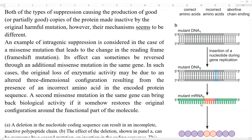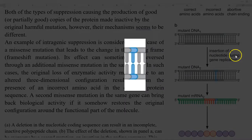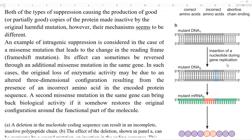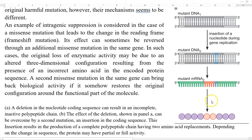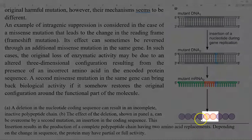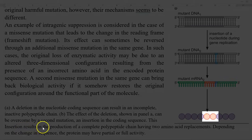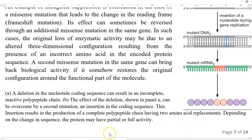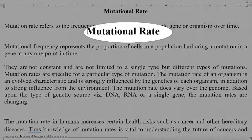The second part of the diagram explains how the suppressor mutation plays a role. Some sequence has been inserted — an insertion of a nucleotide occurring during the gene replication process. This insertion codes for some amino acids, and the previous missense codon-based amino acids are now replaced with two other different amino acids. This insertion results in the production of a complete polypeptide chain having two amino acid replacements, and depending upon the change in the sequence, the protein may have partial or full activity.